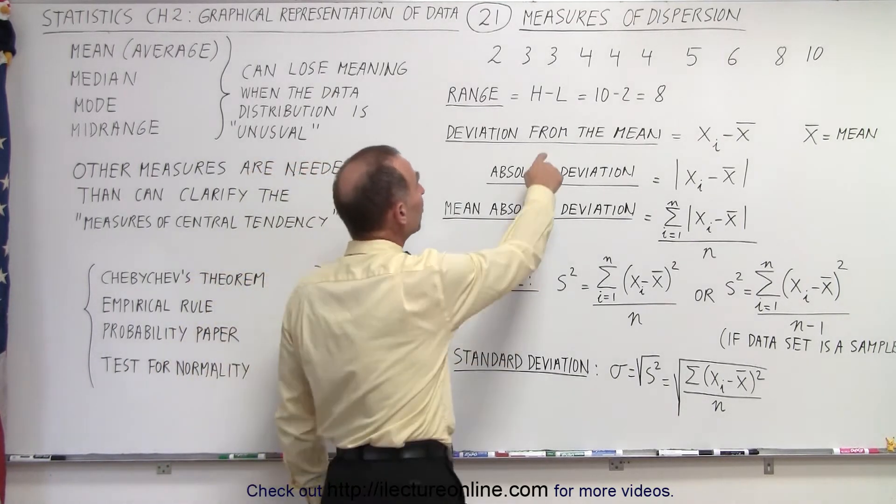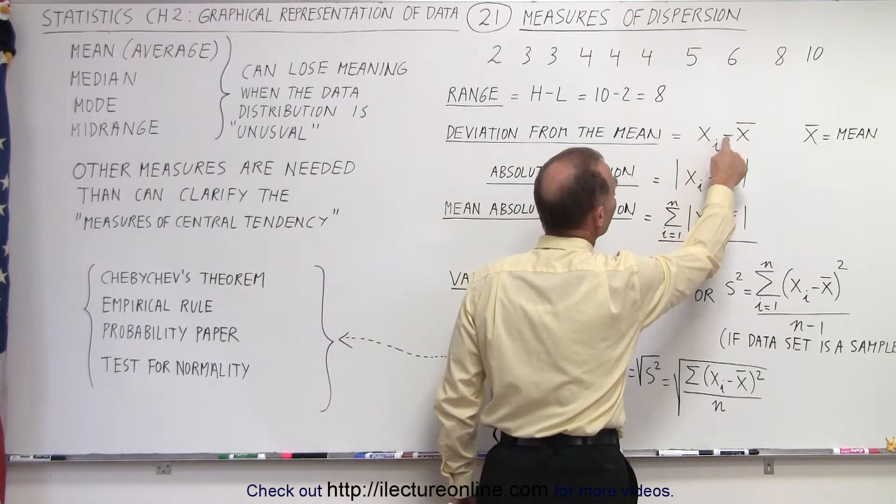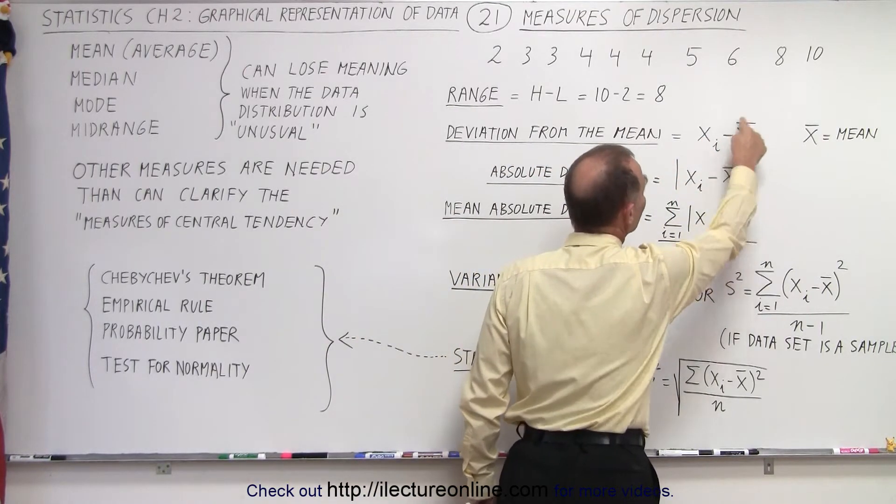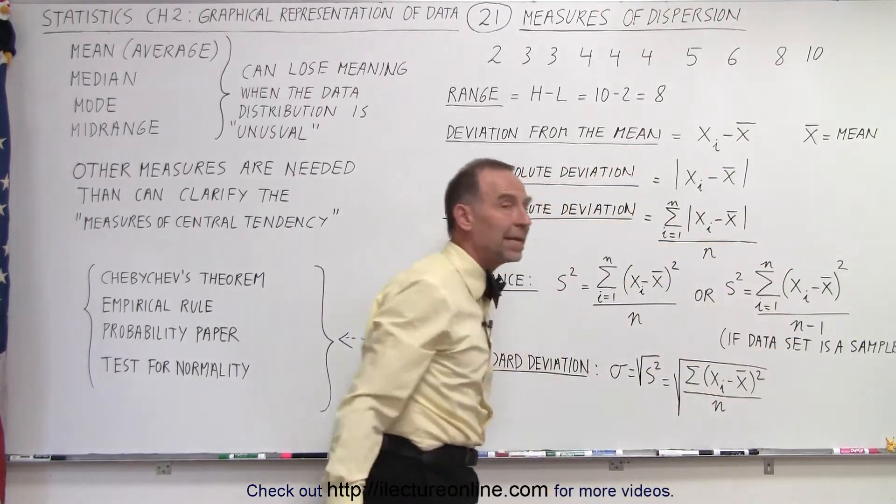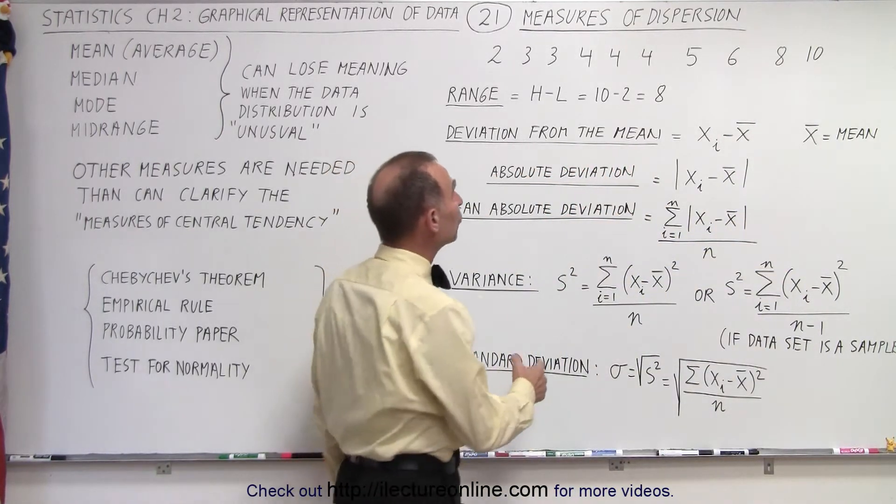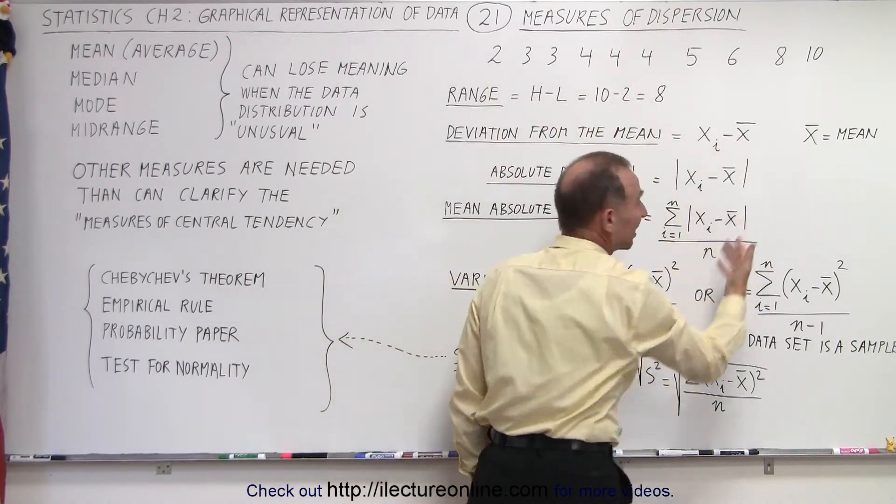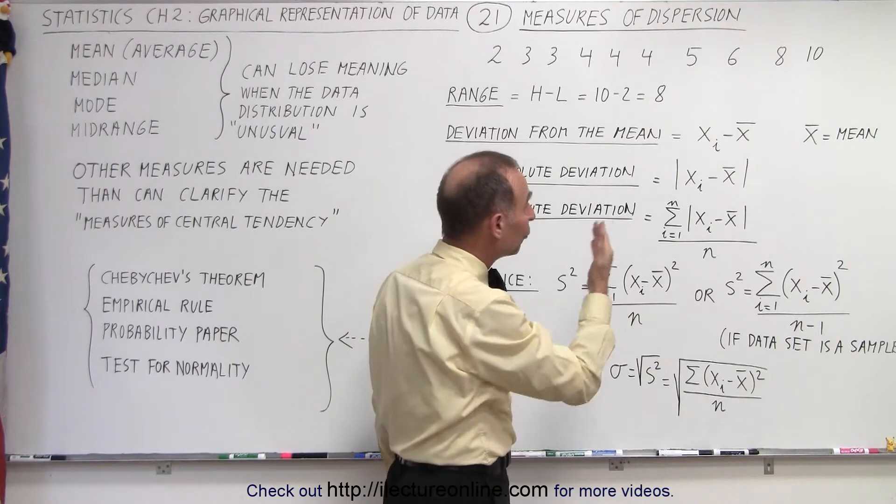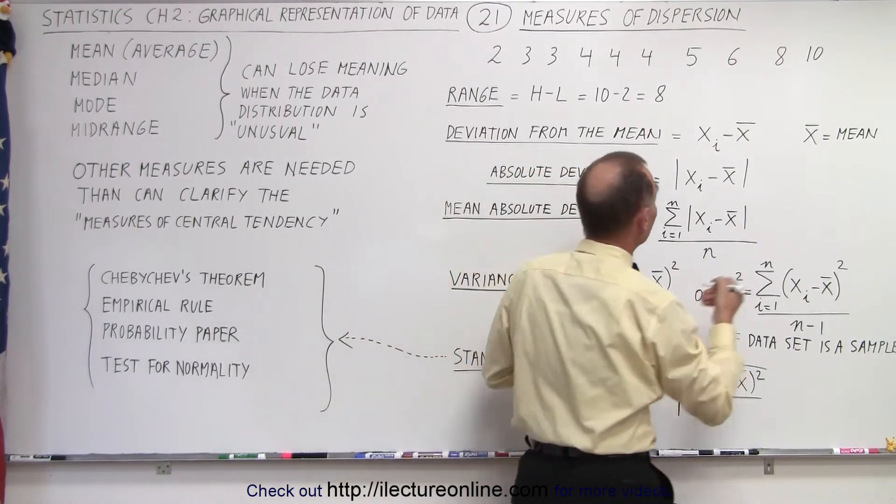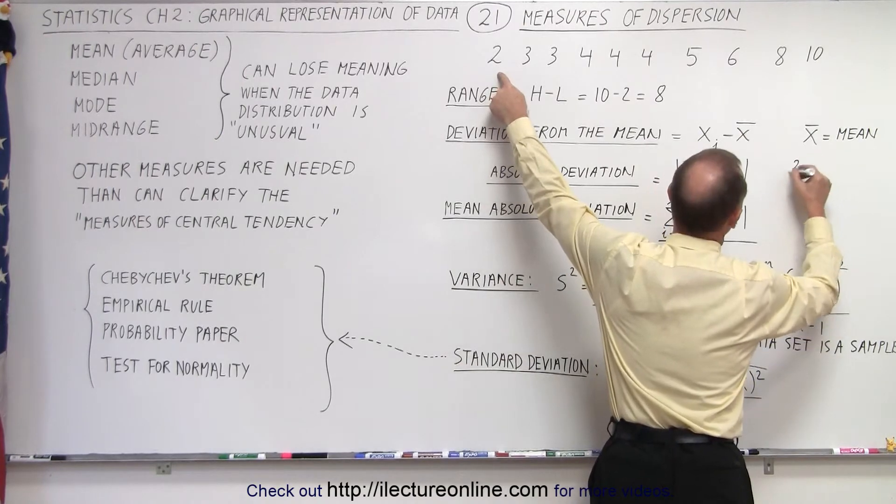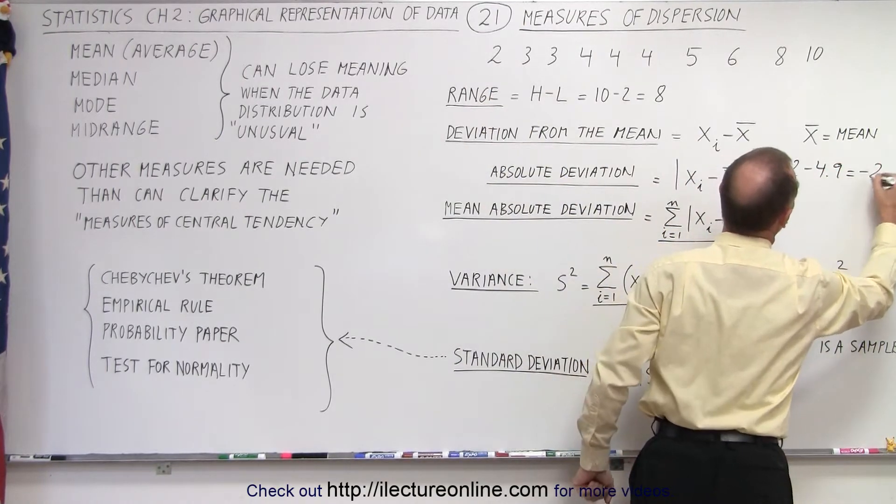The deviation from the mean is the difference between any one of the data points minus the average. This here symbol, an x with a line over it, means the average or the mean. And so when we take each value, for example, we take 2 minus the average. Remember, the average was 4.9. Then 2 minus 4.9, that's going to give you a negative number. For example, we take the first data point, 2 minus the mean, which was 4.9, that gives us minus 2.9.